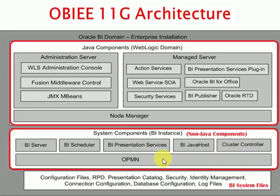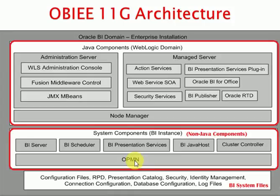In 11g and 10g, we used OPMN — Oracle Process Manager — to maintain services. But in 12c, OPMN was removed and they added WLST, the WebLogic Server Scripting Tool. Using WLST commands, you manage services the same way OPMN worked through commands. WLST replaced OPMN — it is available in 11g but not available in 12c.